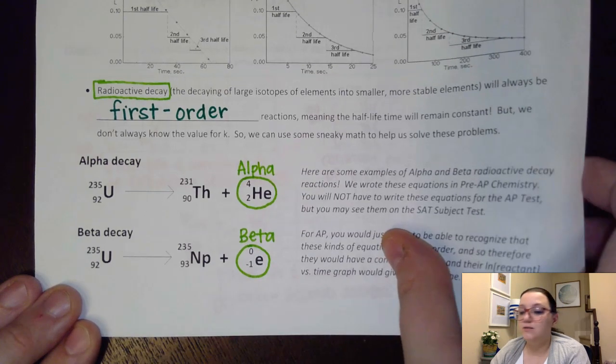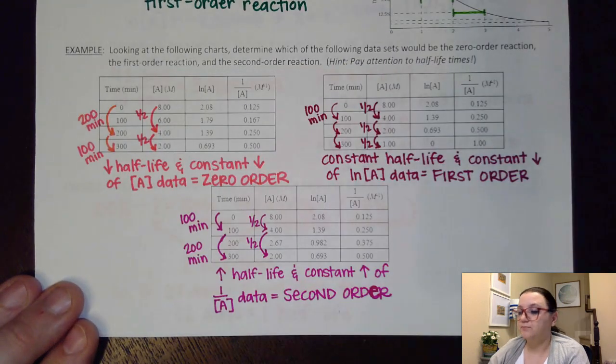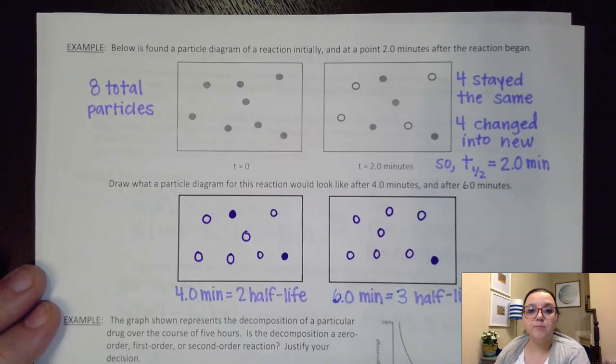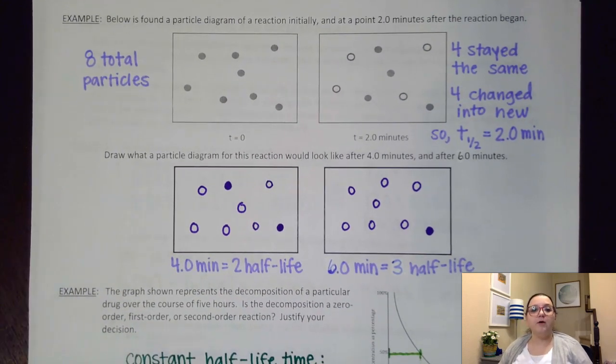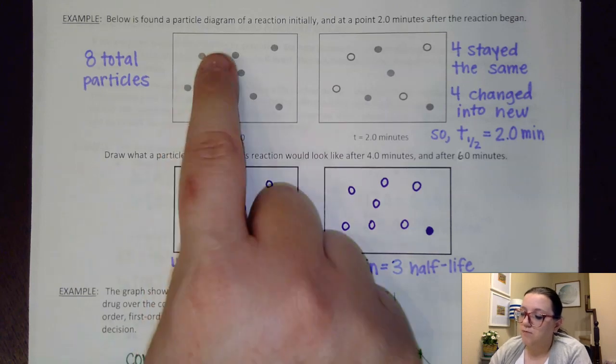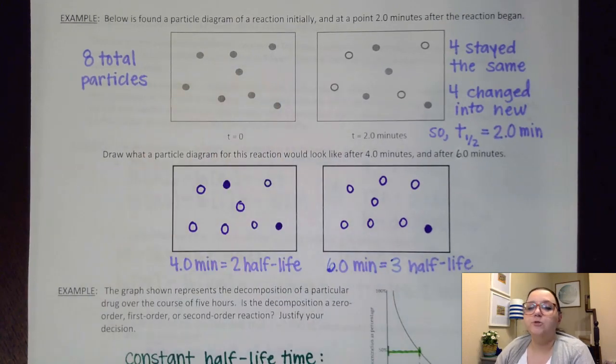All right, let's go ahead and switch to the next page where we're going to see some examples. So the first example here says, hey, we have a particle diagram of a reaction initially and at a point two minutes after the reaction began. And then it wants us to draw a particle diagram for what this would look like at various time intervals. So to start us off here, you notice all of our initial particles are here shaded in, which means this is my reactant. And if I count them up, I notice eight total particles.